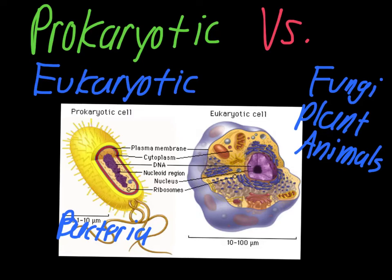The eukaryotic cells are more complicated. You can see on the inside of them, they've got all the different little organelles — it's got the nucleus, it's got the mitochondria, the endoplasmic reticulum around the outside there. Whereas the inside of the prokaryotic cell is very simple.